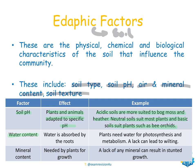Water content is also very important — water is absorbed by the roots and used for photosynthesis and general metabolism. A lack of water can lead to wilting. Mineral content is needed by plants for growth, and a lack of any mineral can result in stunted growth. So soil pH, water content, and mineral content are three edaphic factors that can affect ecosystems.